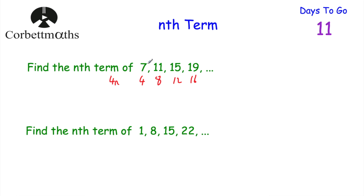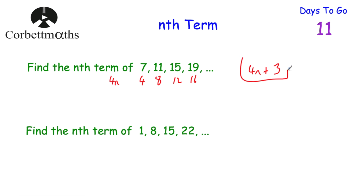Our sequence was 7, 11, 15, 19. To get from 4 to 7 we add 3. To get from 8 to 11 we add 3. To get from 12 to 15 we add 3. To get from 16 to 19 we add 3. So the nth term of the sequence would be 4n plus 3. And if you got that, well done.